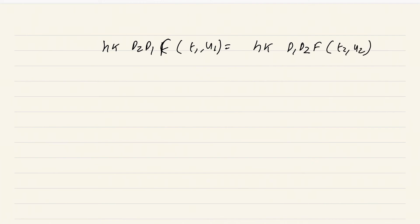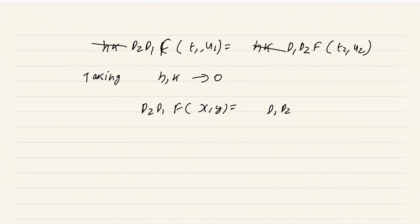So the net result is: h*k * d2d1f(t_1, u_1) = h*k * d1d2f(t_2, u_2). Since h and k are nonzero, they can be cancelled. As we shrink h and k, t_1, u_1, t_2, u_2 all squeeze toward (x,y). Taking h, k → 0 and using the continuity of the partial derivatives, we immediately get d2d1f(x,y) = d1d2f(x,y), as claimed.